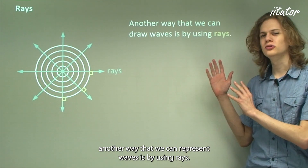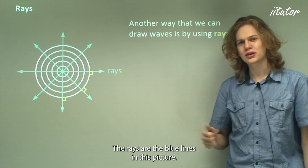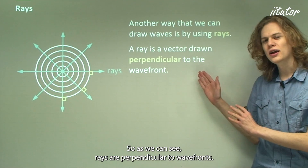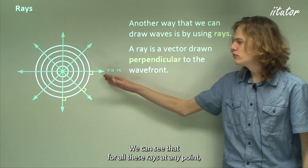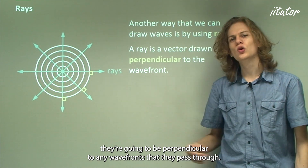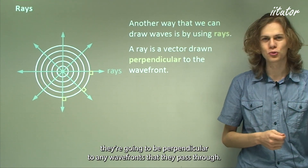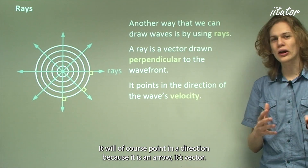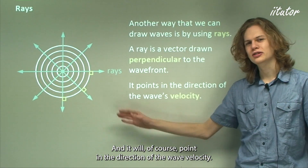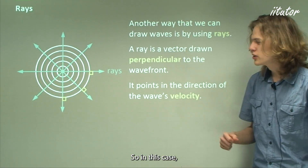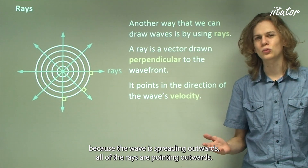Another way that we can represent waves is by using rays — the blue lines in this picture. Rays are perpendicular to wavefronts. At any point they're going to be perpendicular to any wavefronts that they pass through. A ray is an arrow vector and it points in the direction of the wave's velocity. Because the wave is spreading outwards, all of the rays are pointing outwards.